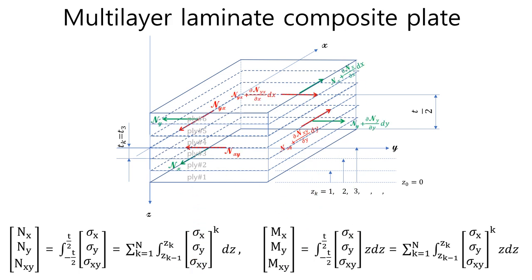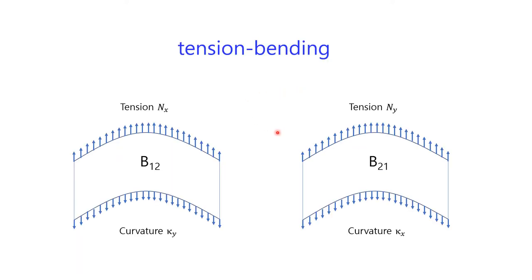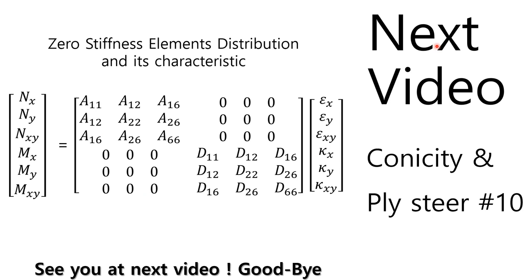If you watched the previous videos, you can easily understand the upcoming videos. In the previous video E34, I explained how to calculate the forces and moments of a multilayer laminate composite plate. Recently, I explained how to find the role of individual stiffness elements. The next video will be part 10, and I will explain laminate theory part 4 about the zero stiffness element distribution and their characteristics. Please hit the like and catch the brand new videos by free subscription. See you in the next video. Goodbye, guys!